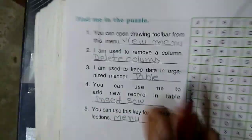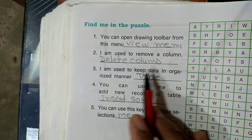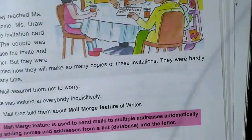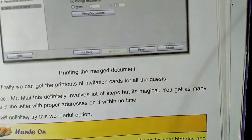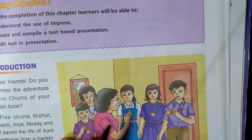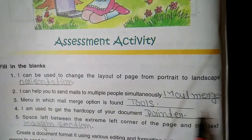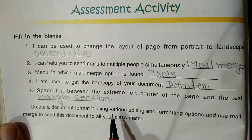Now, find me in the puzzle. Assessment activity. Orientation, Mail Merge, Tools, Printer, Margin, Menu, View menu, Delete columns, Table, Insert, Show.